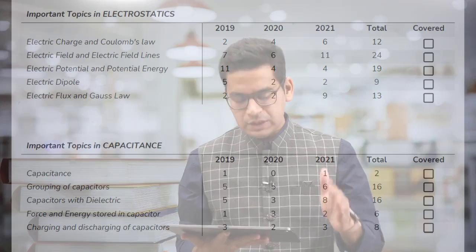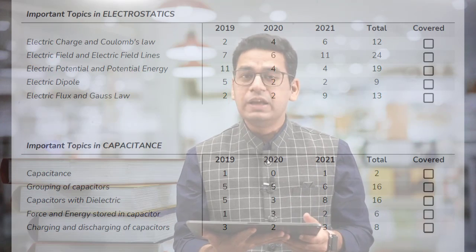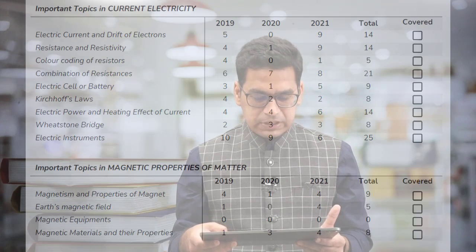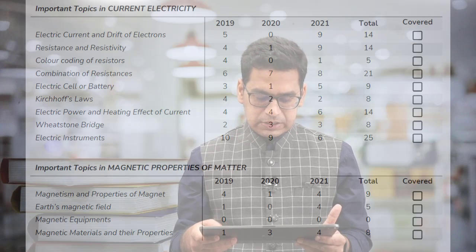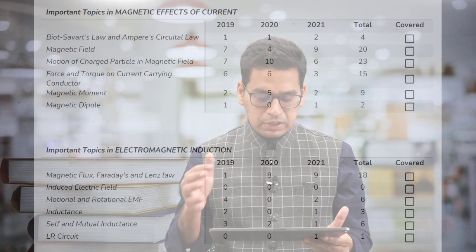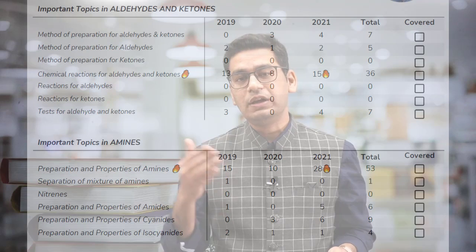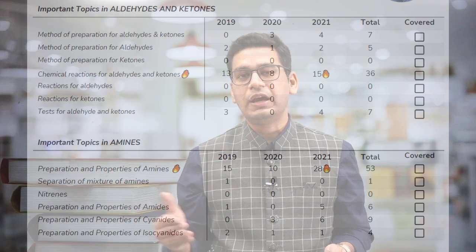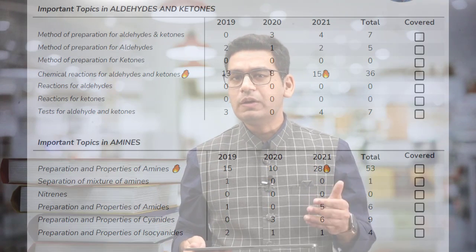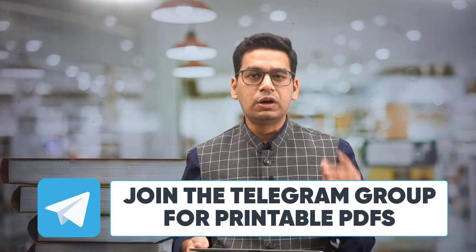So now for Physics — the sheet I'm looking at right now is Electromagnetism. You have a topics list covering electrostatics, capacitance, current electricity, magnetic properties of metals, magnetic effects of current, electromagnetic induction, and AC. Similarly, we have given you sheets for organic chemistry, inorganic chemistry and physical chemistry. You will know which topics inside those chapters are important with regard to JEE Mains.